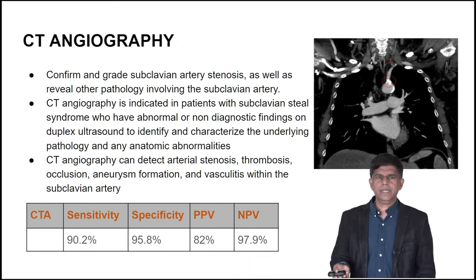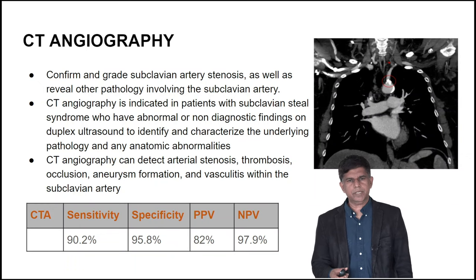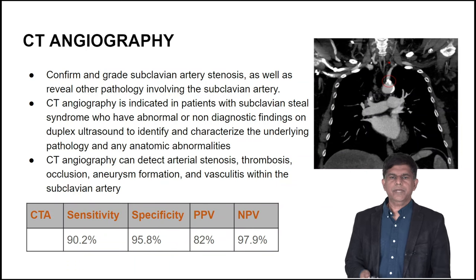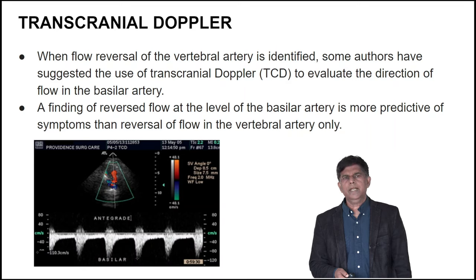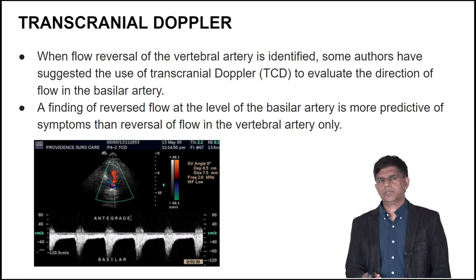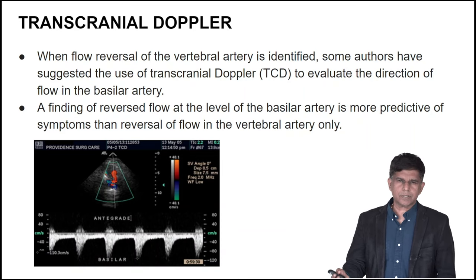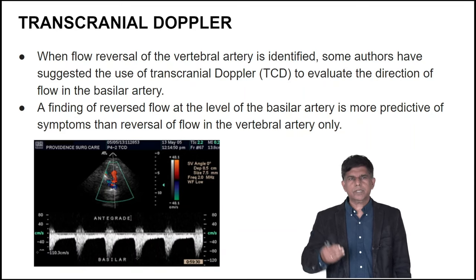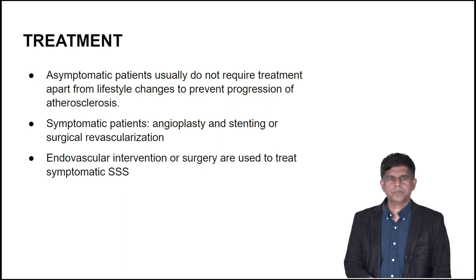CT angiography sensitivity is around 90.2% to 95.8%, with a positive predictive value of 82% and negative predictive value of about 97%. Additionally, transcranial Doppler can be used to identify reversal of flow in the vertebral arteries. Some have suggested using transcranial Doppler to evaluate the direction of flow in the basilar artery, making it also very useful.